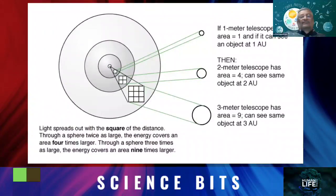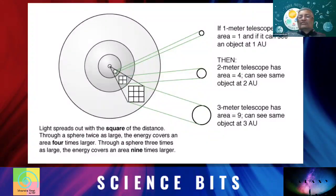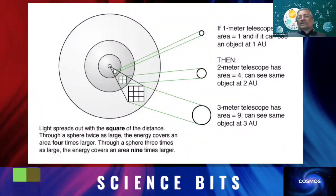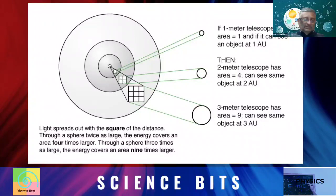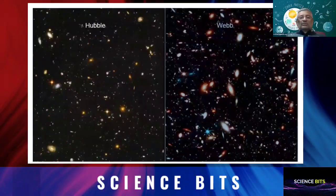So which means if the collecting area is more, then one, you can see dim objects. Second, you can also see objects which are very far away because when an object is very far away, it's going to be dim. So then it will be visible. That's the use of having a big telescope.